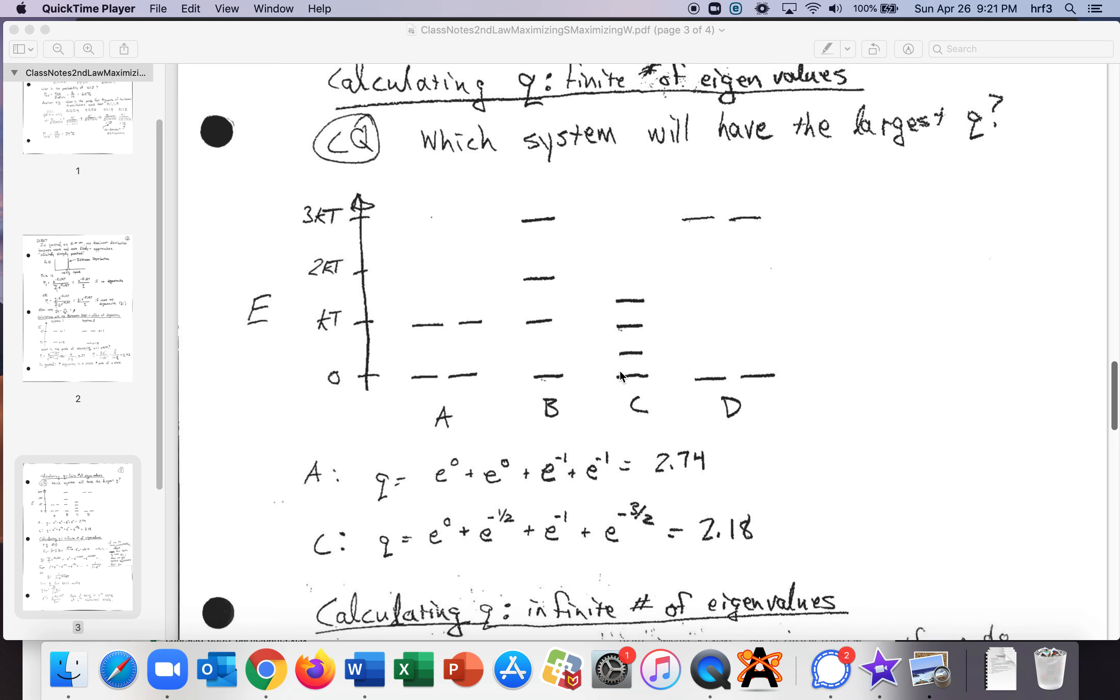C we don't have any degeneracy we've got this one and then we've got a half and then one and then three halves add those up and it's 2.18 and so on I'll let you think about how you would calculate b or d but you can see that q is larger for a than it is for c.